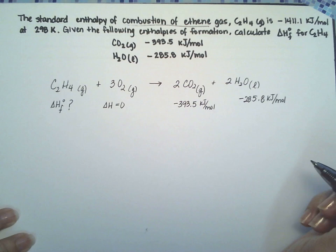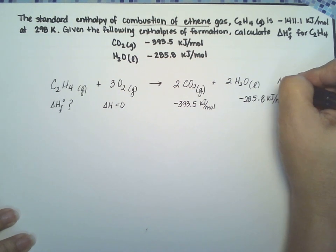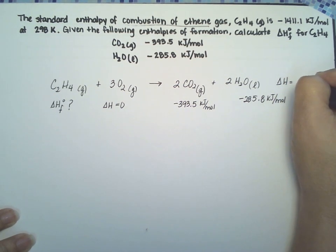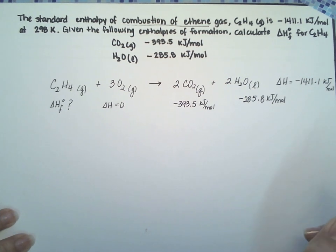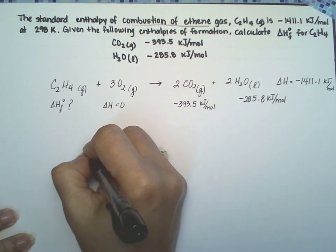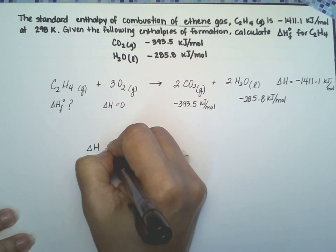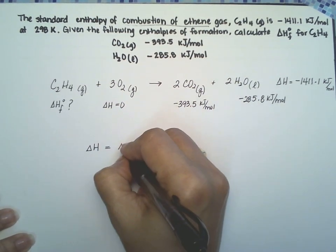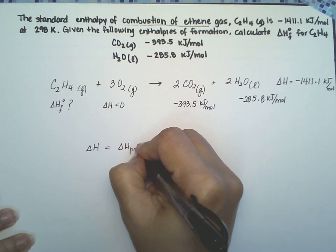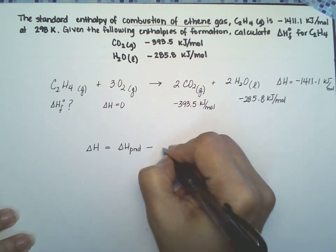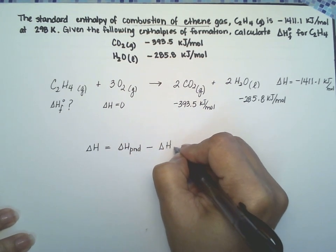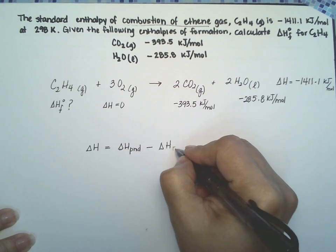So here's what we're going to do. This reaction all by itself has an enthalpy associated with it of 1411.1, and we know that delta H is going to equal the delta H of the products minus the delta H of the reagents, the reactants.